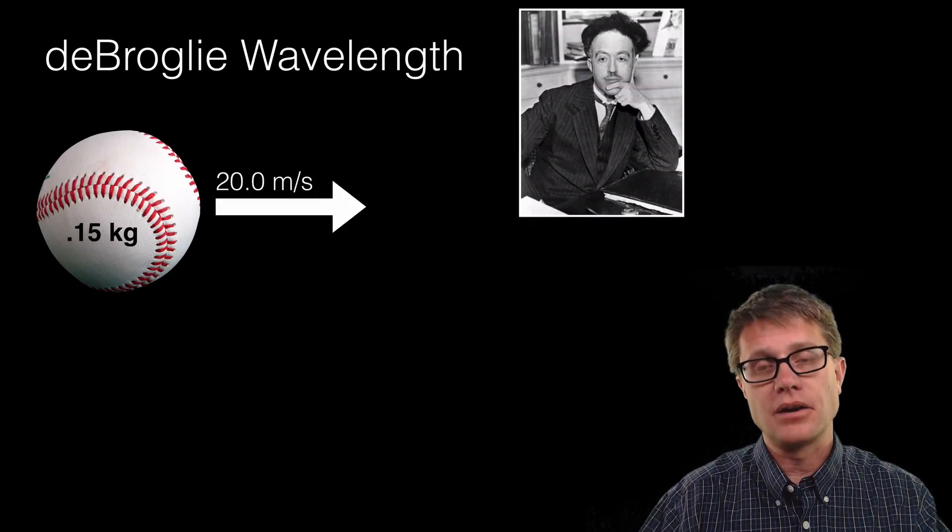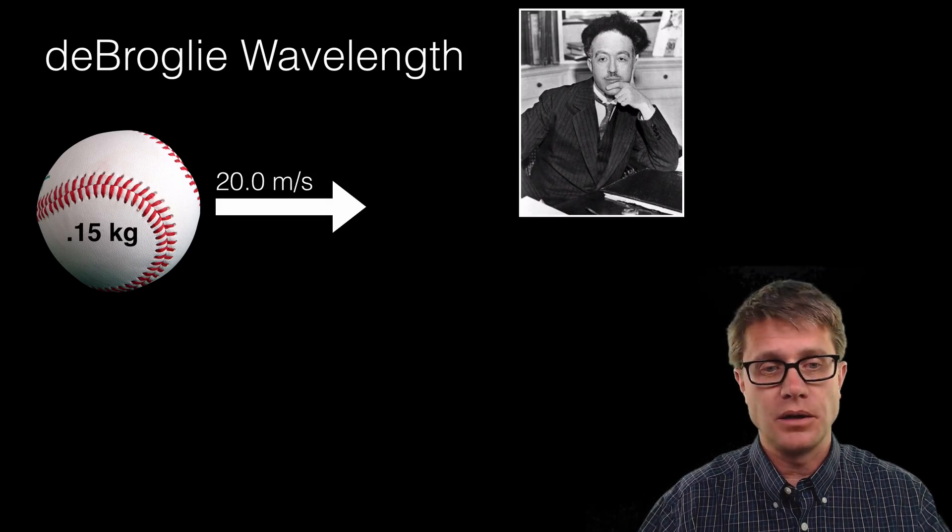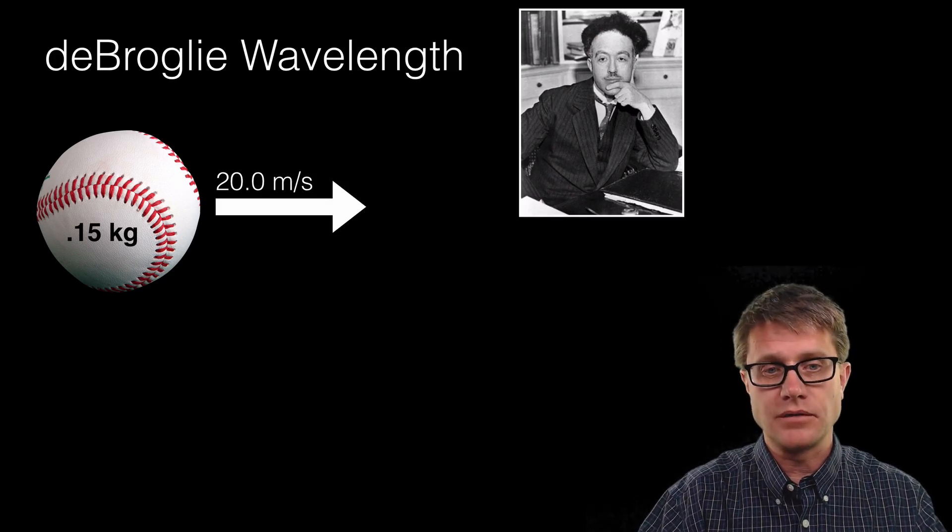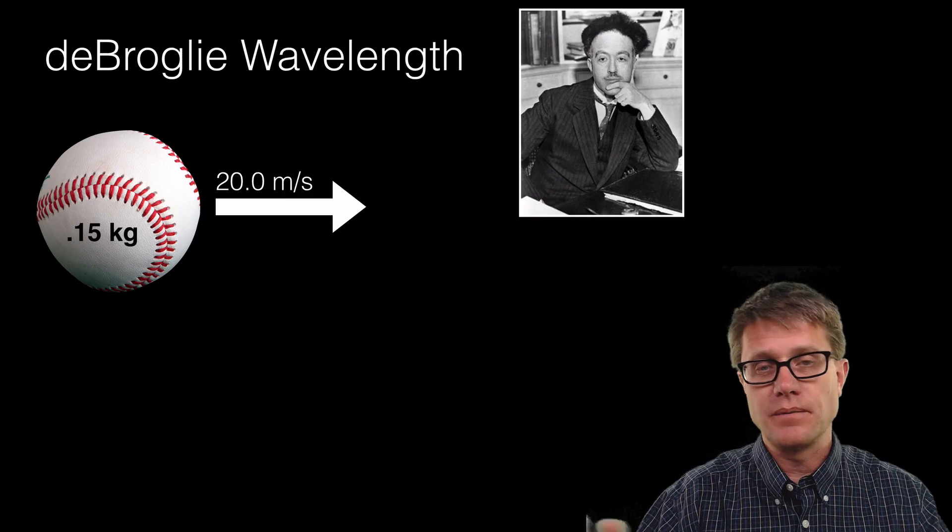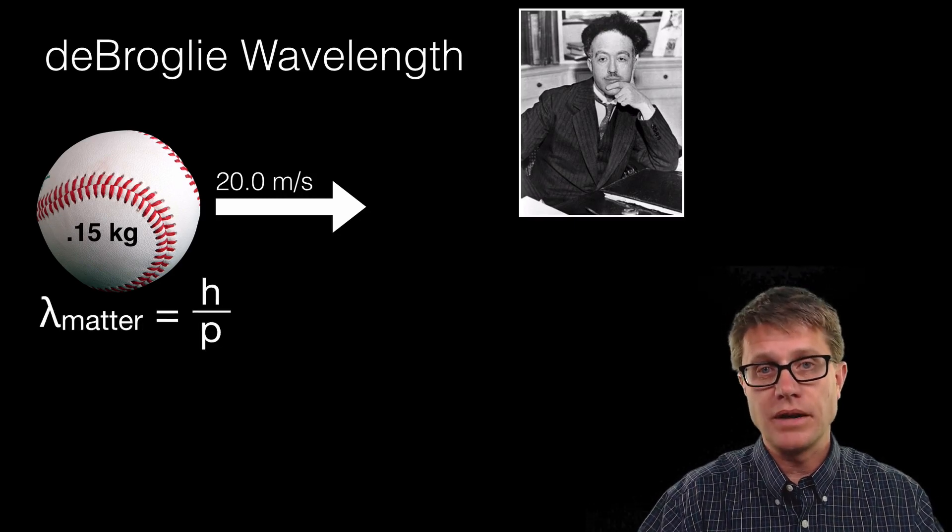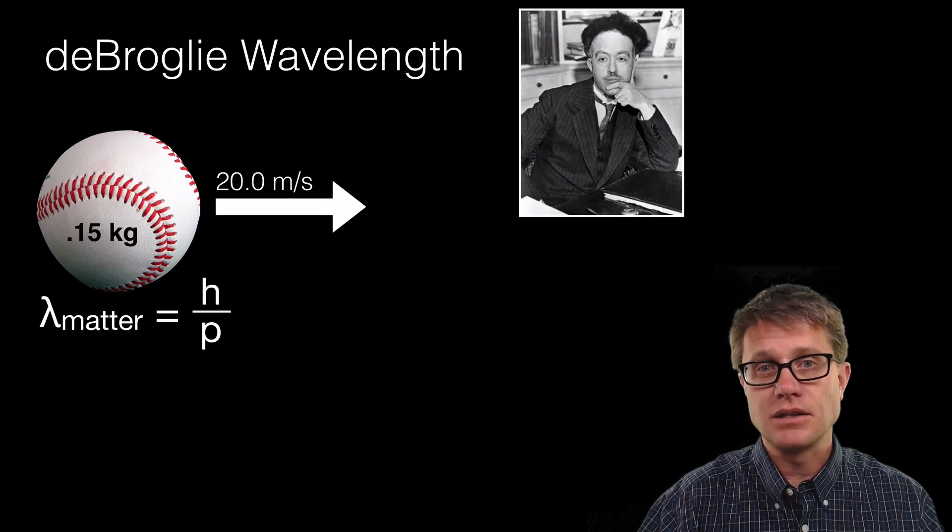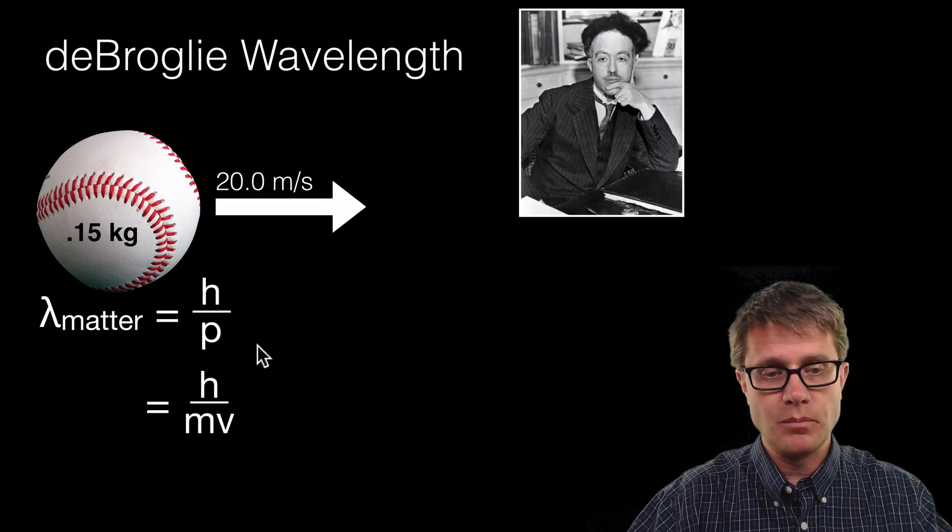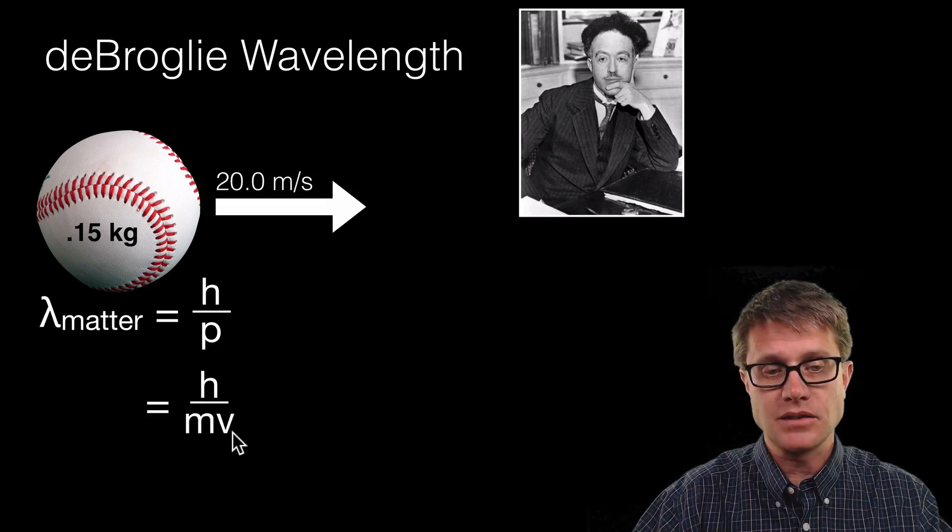And so let us just look at matter as a particle. Let us just look at a baseball. A baseball has a mass of 0.15 kilograms. And let us say I throw it, it has a velocity of 20 meters per second. So we can use de Broglie wavelength. It is Planck's constant divided by momentum and remember momentum is simply mass times velocity.